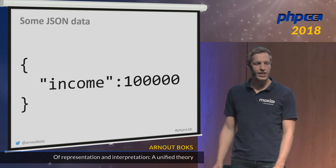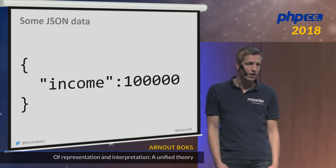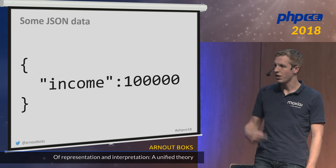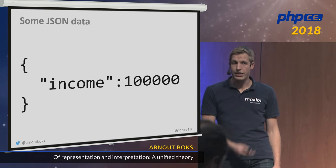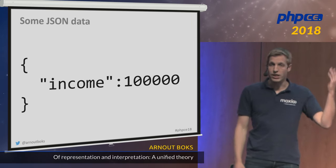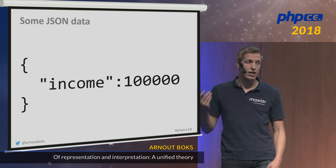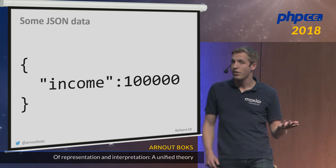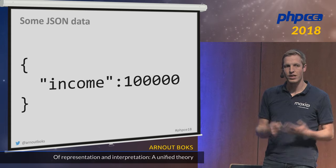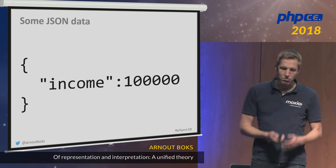Let's look at some JSON data about a person and their income. We don't know much from this — we don't know if this is a monthly or yearly income. It might be in US dollars or Zimbabwean dollars, in which case it wouldn't be worth much. Again, the interpretation of the data means a lot.